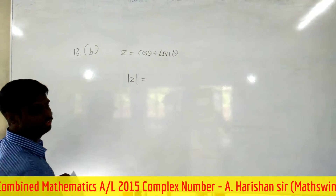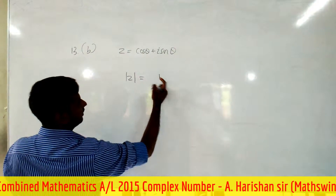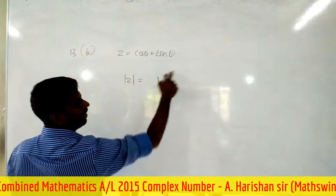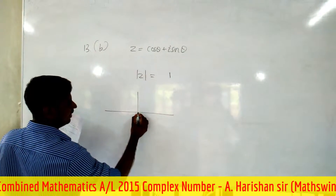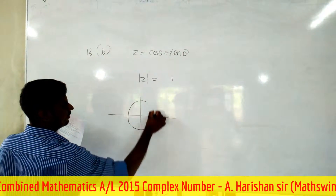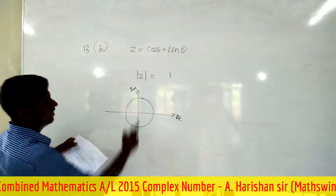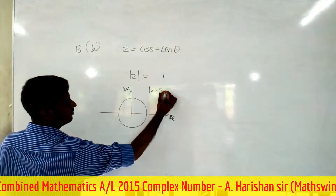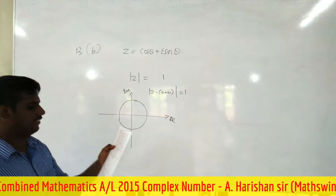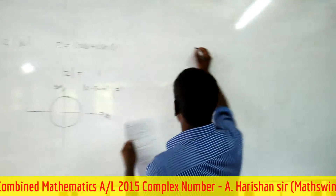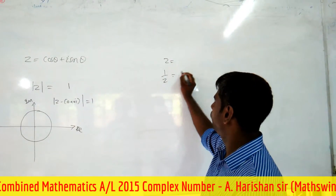Mod of z equals 1, because cos²θ + sin²θ = 1. So what is the locus? This is the imaginary axis and this is the real axis. The locus is the unit circle, because mod of z minus (0 + 0i) equals 1.